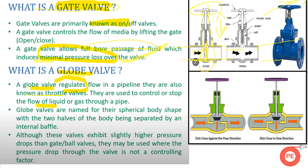Next, what is a globe valve? Globe valves are basically an advanced version of gate valves where we can take dual services. Globe valves can be used as on-off valves, but in addition to that, the main purpose for which globe valves are used is throttling. If you want to throttle a system or control the flow, we go for globe valves. Because of their distinct construction, they are used for throttling or pressure-regulating purposes.